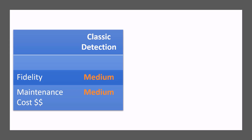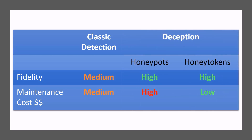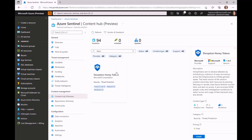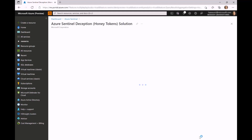Classic cyber defense relies on attackers making some noise to be detected. As attackers become more and more sophisticated, deception becomes increasingly common, augmenting this basic layer. This proactive approach uses fake resources to identify malicious activity with high fidelity. Honey tokens offer a low-cost, high-efficacy realization of this defense mechanism. This is a quick demo of the deception or honey token solution for Microsoft Sentinel.